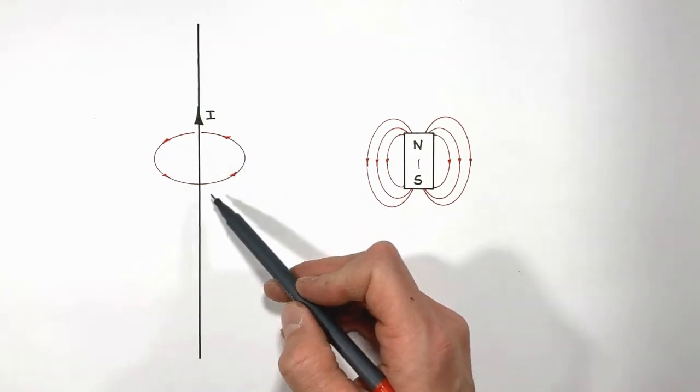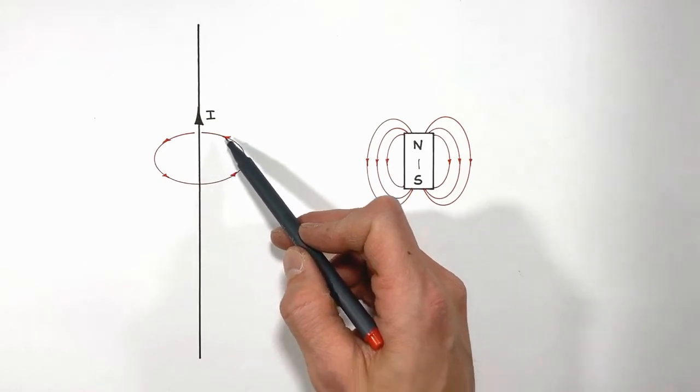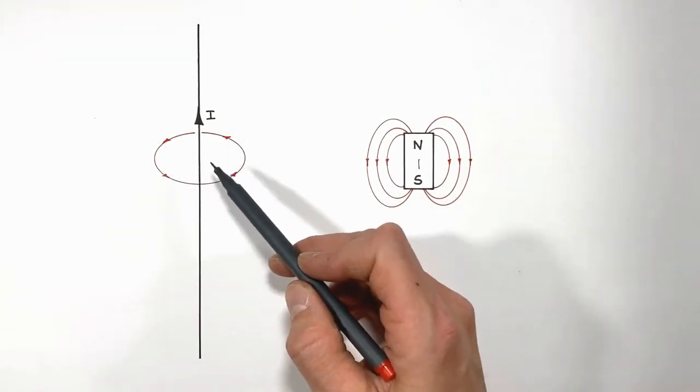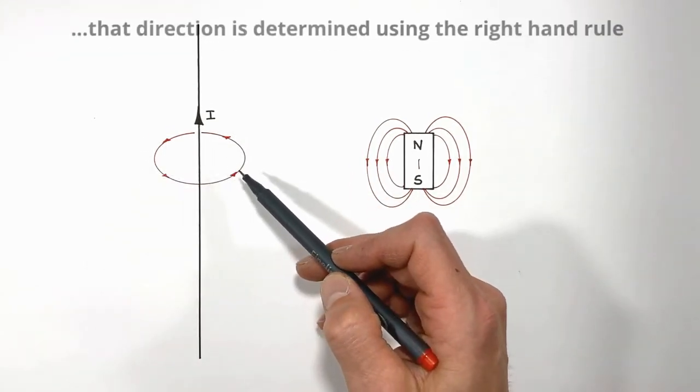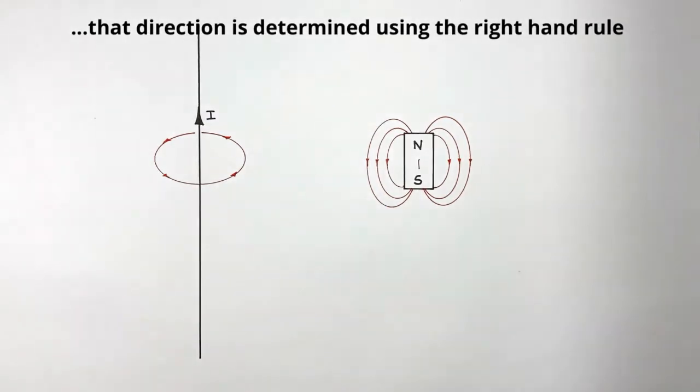But the magnetic field produced by a wire runs in a continuous circle around the wire. It doesn't start or finish anywhere—it's always going in a circle in a particular direction. And that's maybe a bit strange, but it's exactly what happens.